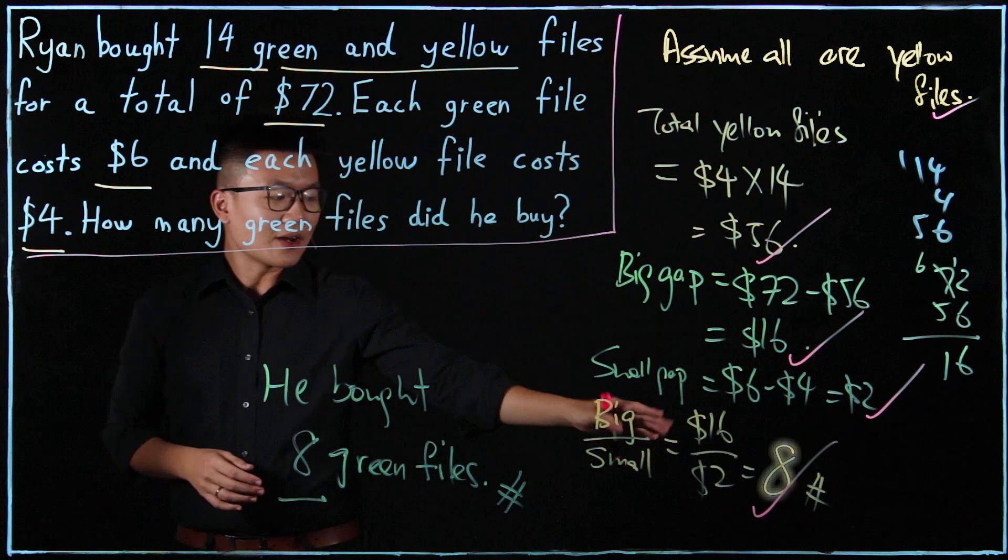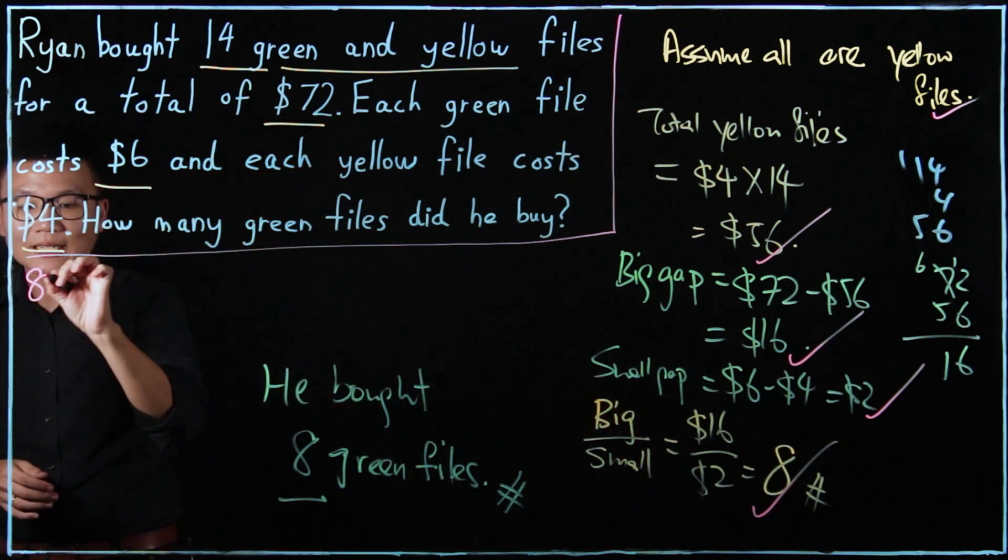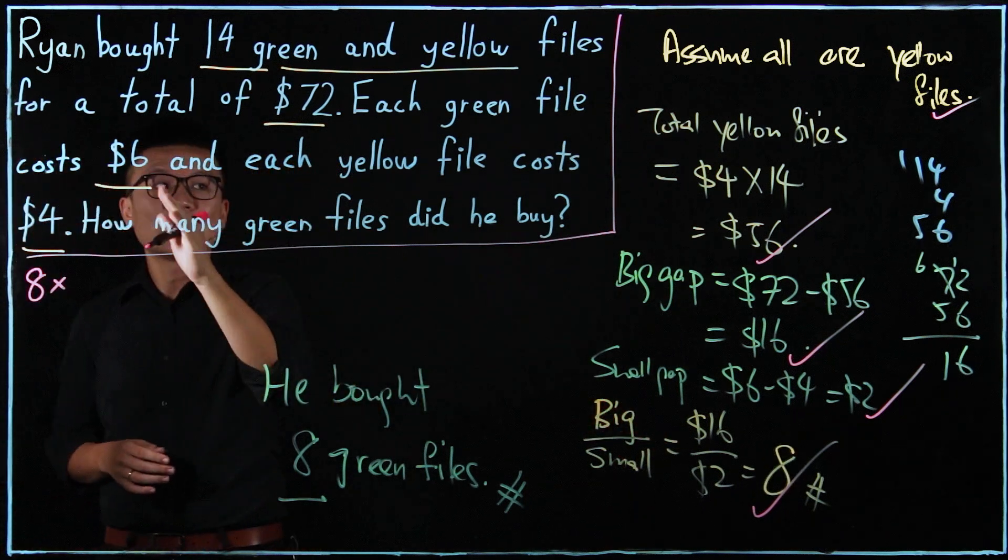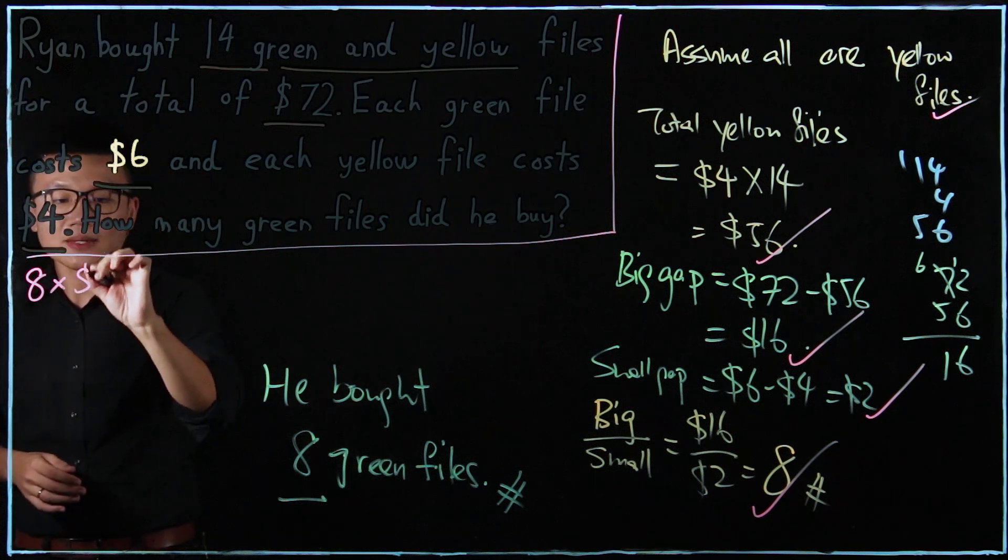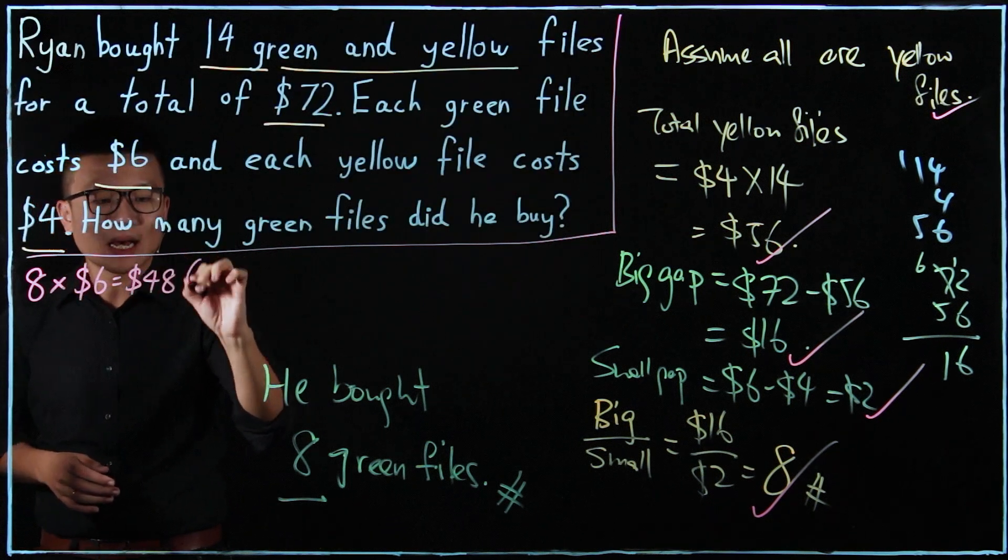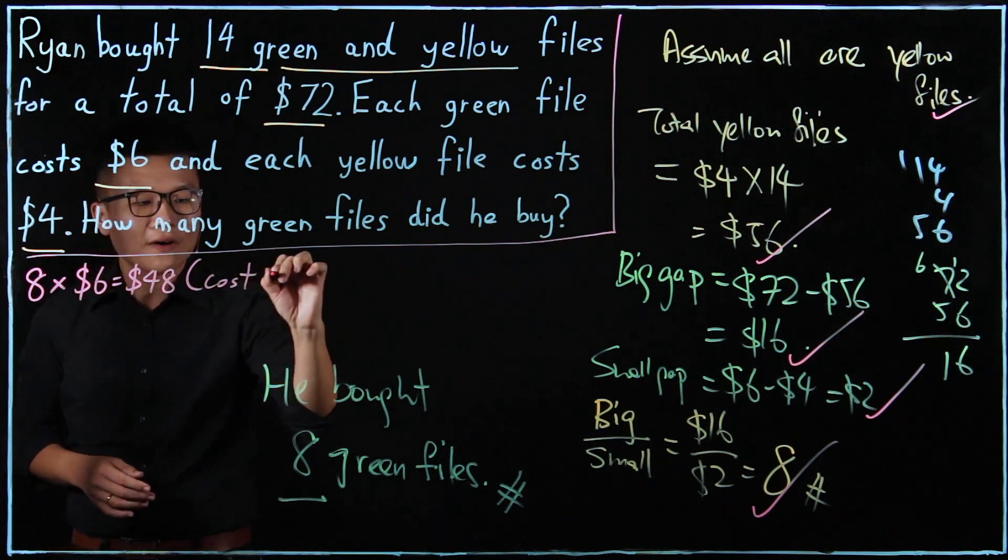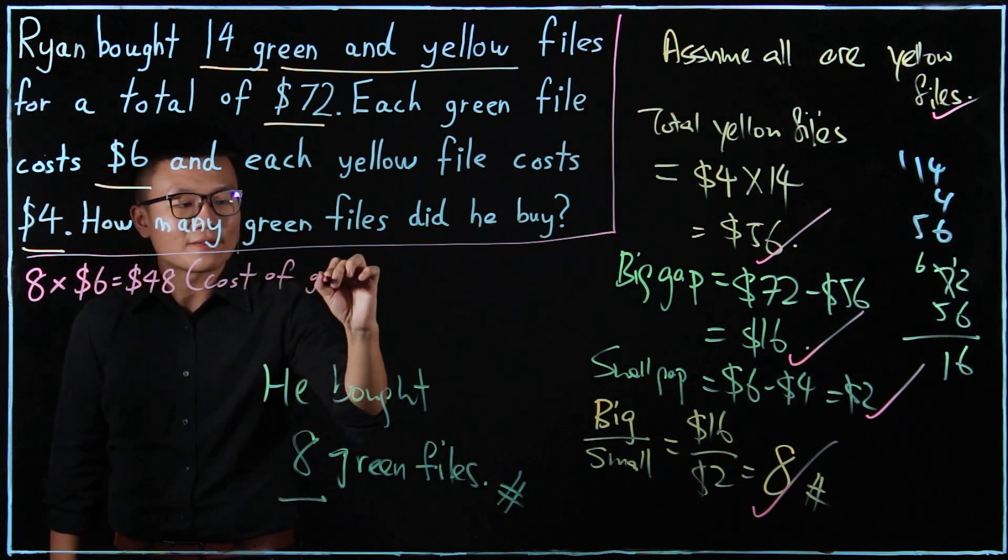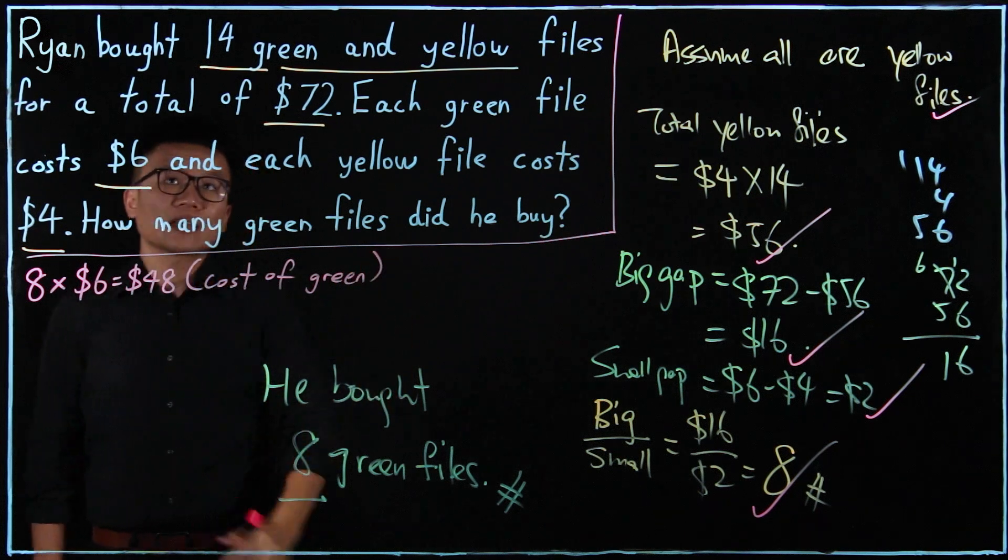So assuming that there's 8 green files, we are going to write 8 multiplied by $6, which is $48. So this is the cost of green files.